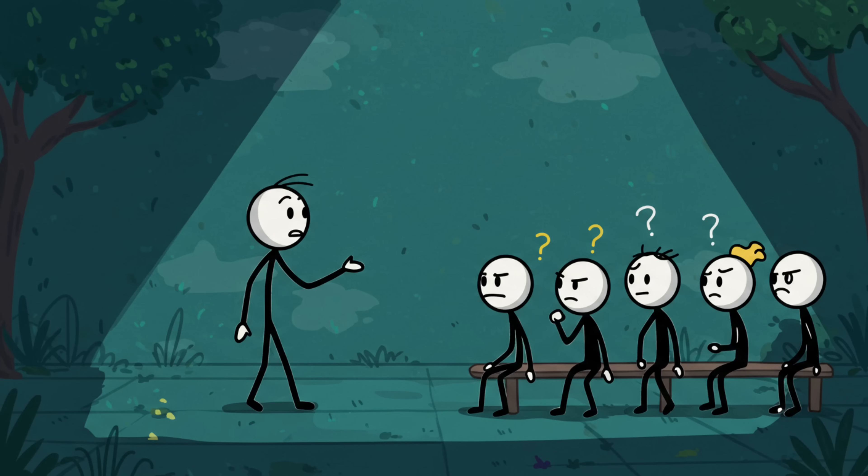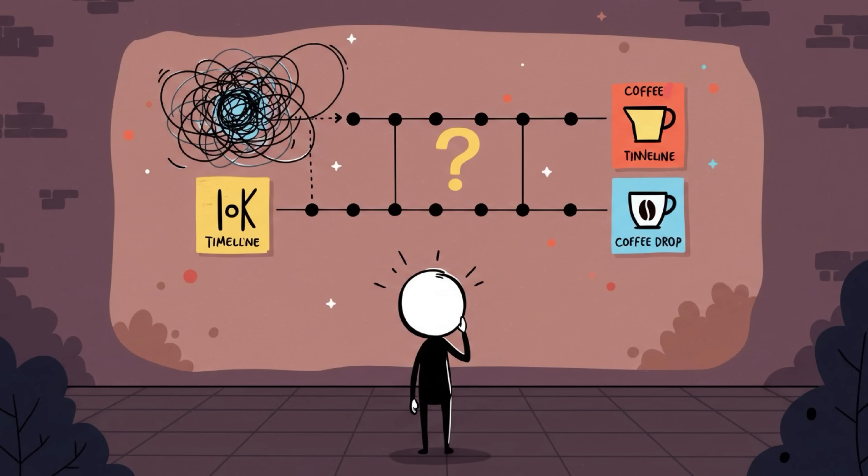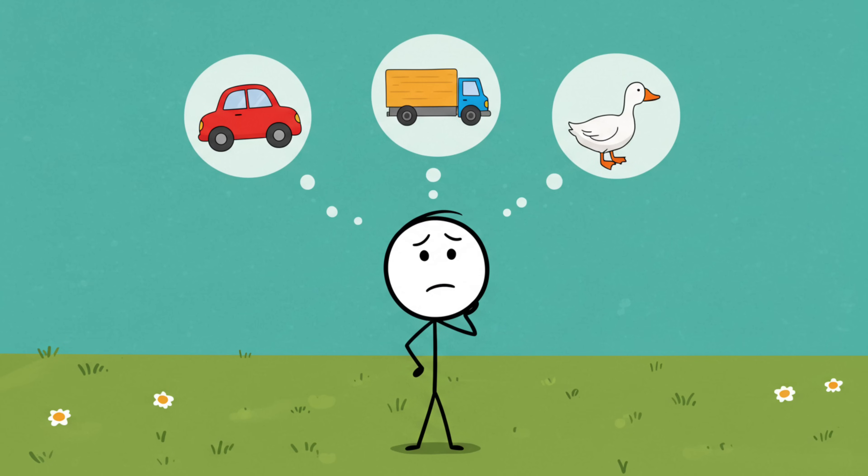Later, when you tell your friends what happened, the story comes out fuzzy. Did the honk come before you dropped the coffee? Or after? Was it a red car, a truck, or an angry goose with a megaphone? Turns out,